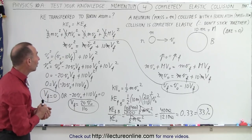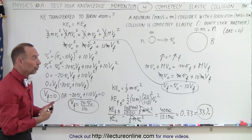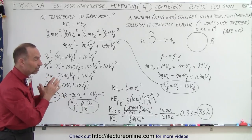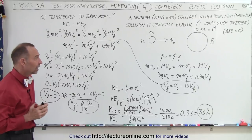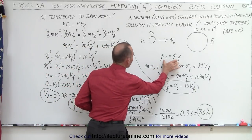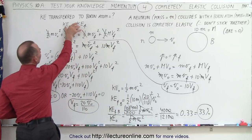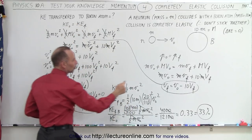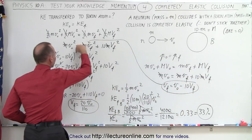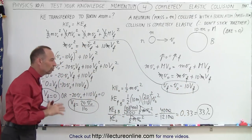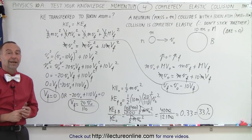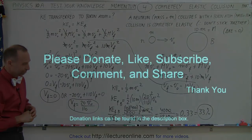That's how we figure out the amount of energy transferred to the boron. For an elastic collision where the two objects don't stick together, you need to use two equations: the conservation of momentum equation and the conservation of energy equation. Solve for one of the two unknowns using the momentum equation, then substitute it into the energy equation to find the other unknown. And that is how we did that. Thank you.